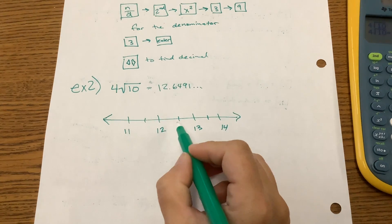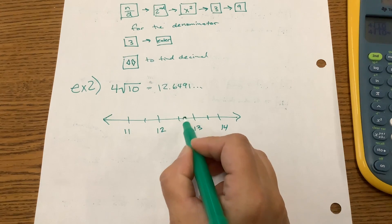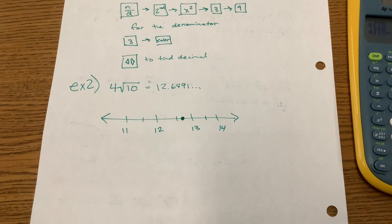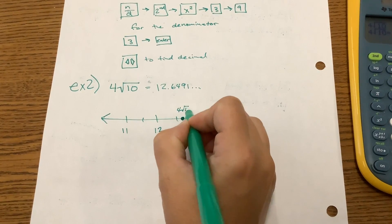So it's going to be past this 0.5 mark. This is like 12.5 here, this little mark here. So we're going to go a little past it, and that's going to be 12.6, which is the 4 times the root of 10.